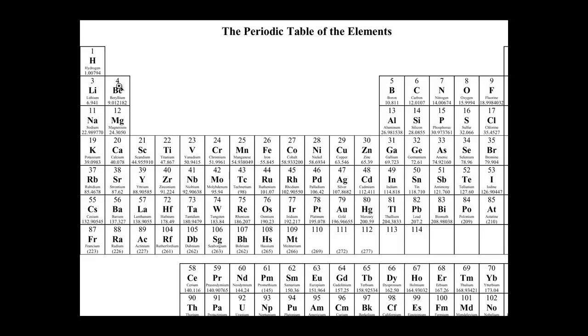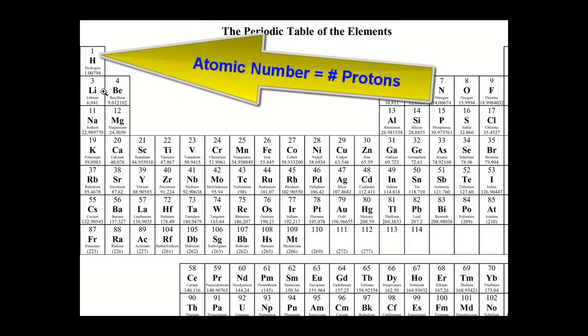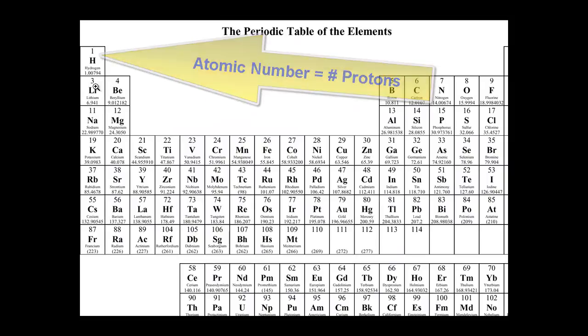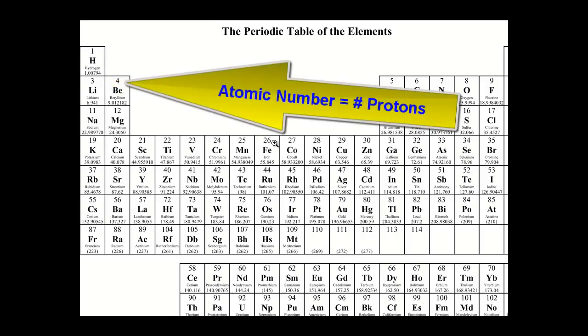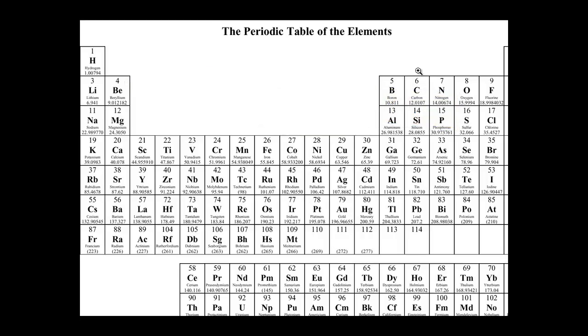So if we go to the periodic table, this number on top of the symbol, for example hydrogen, is a one. That means that it has one proton. Lithium, the number above it, the atomic number three, means it has three protons. The number above beryllium, called the atomic number, is four, since it has four protons and so on and so forth. Iron is going to have 26 protons. That's its atomic number. The atomic number of carbon is six, so it has six protons.